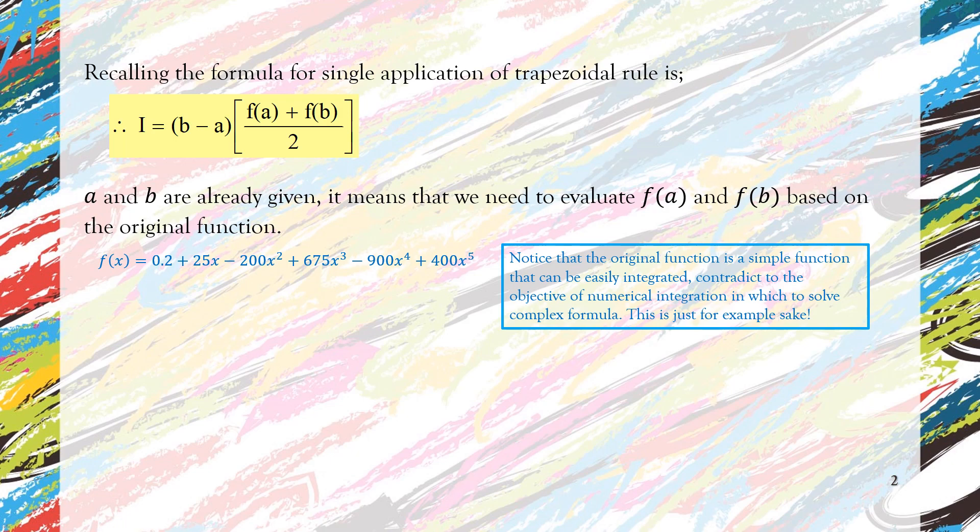But just for the sake of exercise or example, we use a simple one. So let's evaluate f(a), which is f(0). We substitute 0 into that function in blue, then we will get 0.2. And then the other one is f(b), which is f(0.8). We substitute 0.8 into that blue function and we will get 0.232.